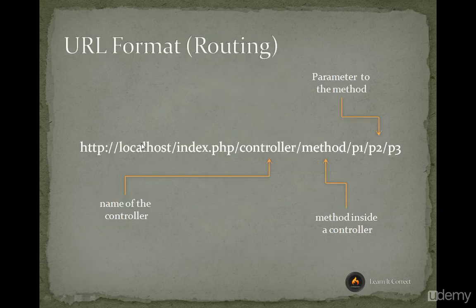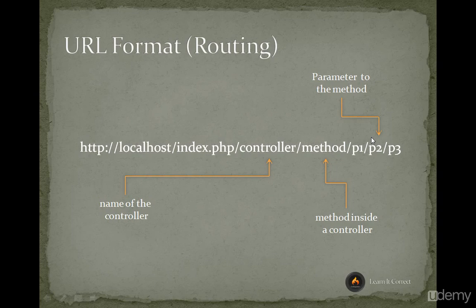This is the URL format for routing: http://localhost/index.php, then you give the name of the controller, then the method name inside the controller, and then the parameters to the method, separated by slashes. So the format is: index.php/controller/method_name/parameters.